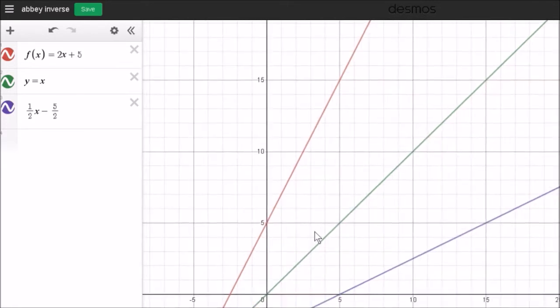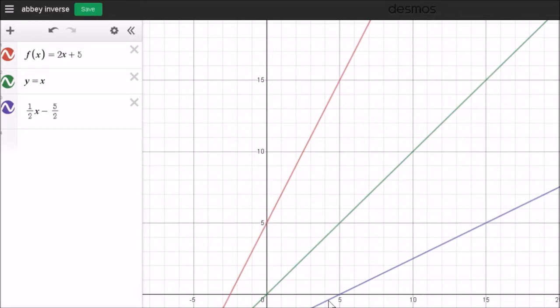And you can see here if we went up to our point 5, 15, we can see that that's going to map to a point 15, 5. So let's talk our way through this. We're going to go along 5 and up 15. And the inverse, we're going to go the opposite direction, we're going to go along 15 and up 5.